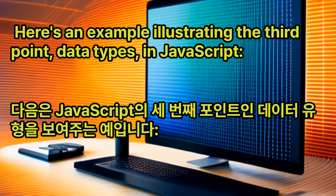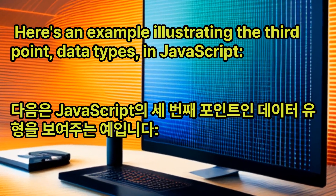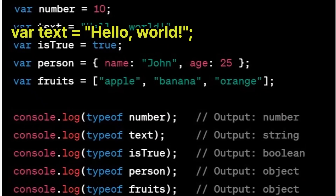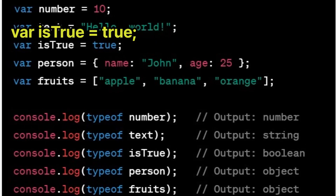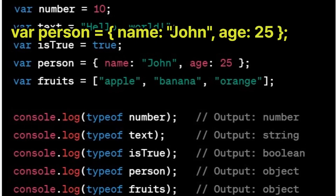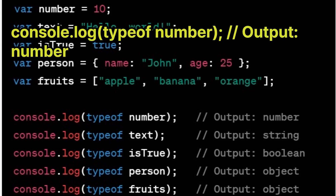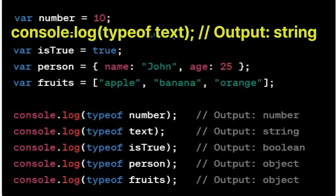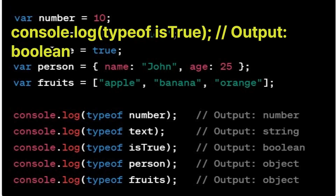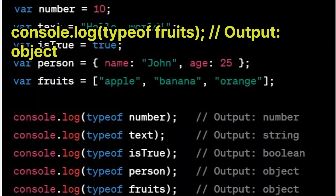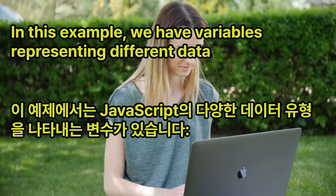Here's an example illustrating the third point, data types, in JavaScript: var number = 10; var text = 'Hello, world'; var isTrue = true; var person = {name: 'John', age: 25}; var fruits = ['apple', 'banana', 'orange']. console.log(typeof number) outputs 'number'; console.log(typeof text) outputs 'string'; console.log(typeof isTrue) outputs 'boolean'; console.log(typeof person) outputs 'object'; console.log(typeof fruits) outputs 'object'.